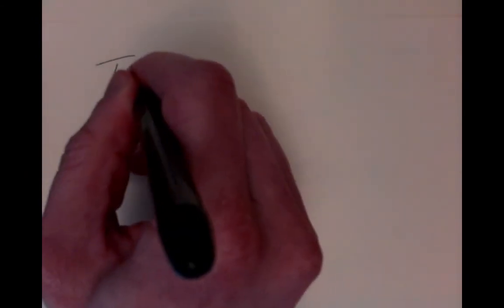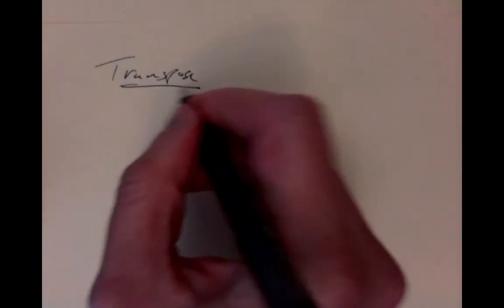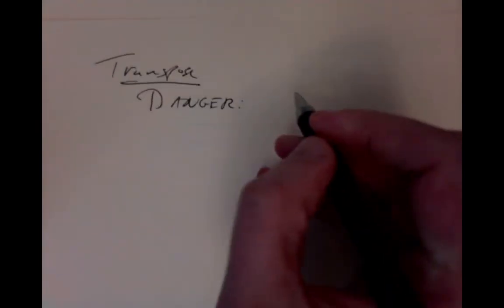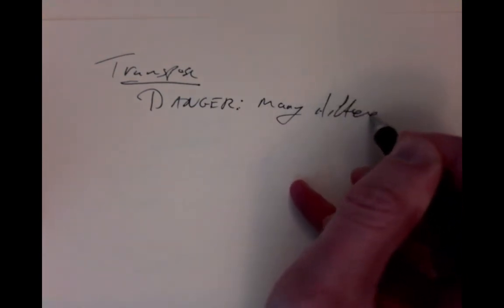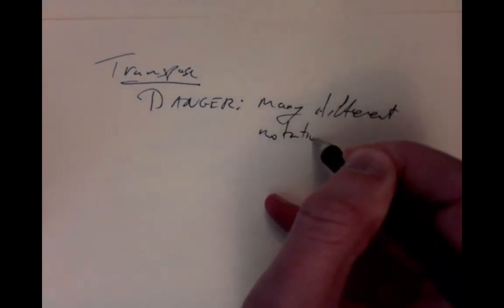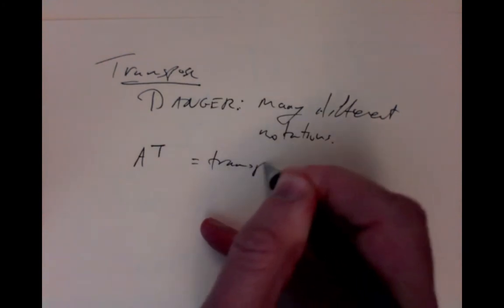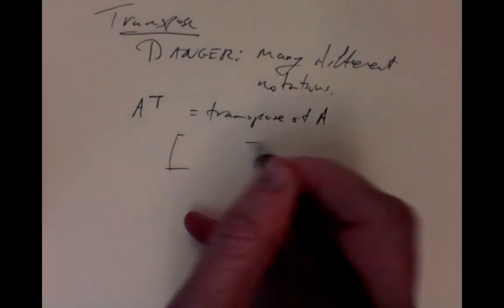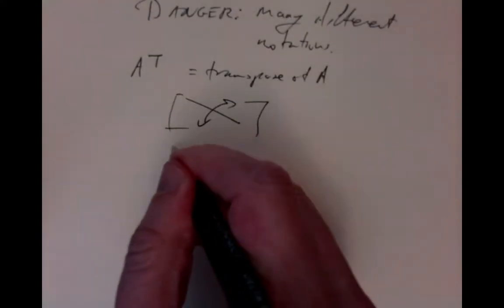One other one that's very elementary is the transpose operation. The transpose of a matrix. There are, unfortunately, many different notations for this. That's the danger. Matrices have been around for a very long time, and many different people have come up with their own notations. So there are many different notations for transpose. We'll follow the notes here. The lecture notes use A^T to mean the transpose of A.